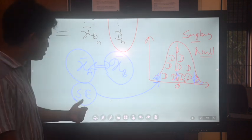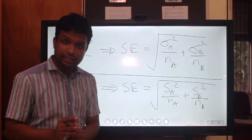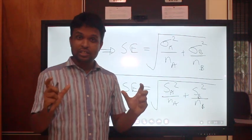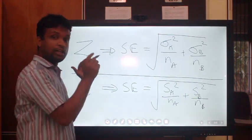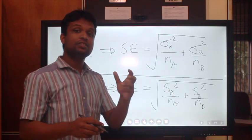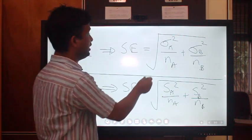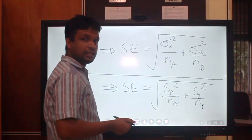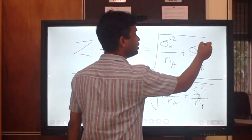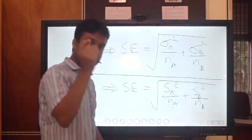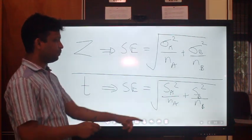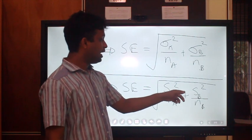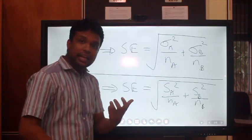Let's consider the formula for standard error. For the z-test, one assumption is that we know the population standard deviation, so the formula is: population variance of A divided by sample size of A, plus population variance of B divided by sample size of B — all under a square root. For the t-test, the only difference is that instead of population standard deviation we use sample standard deviation. So the formula becomes: sample variance of A divided by nA, plus sample variance of B divided by nB — again under a square root.